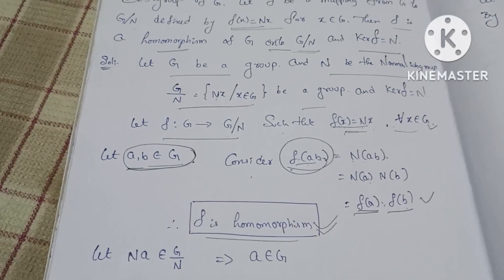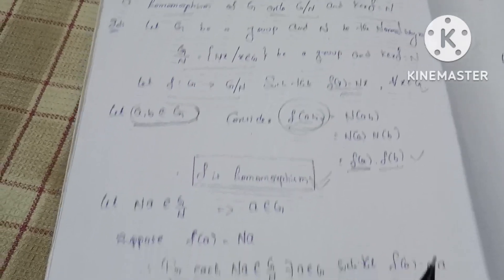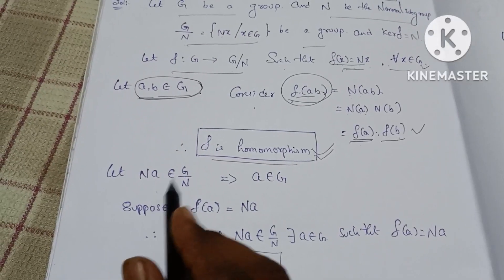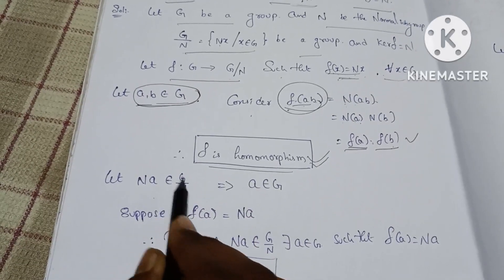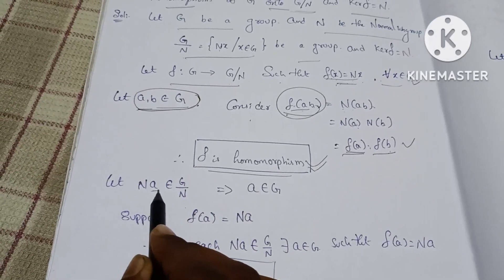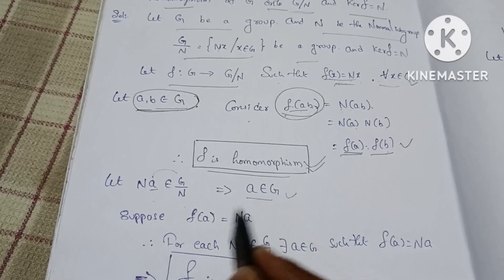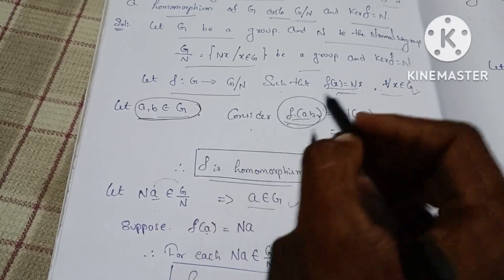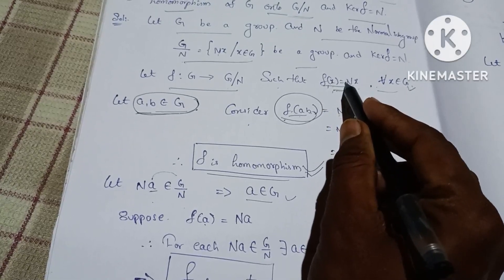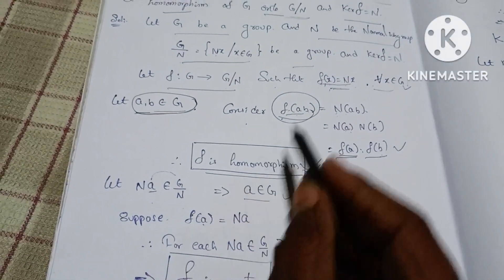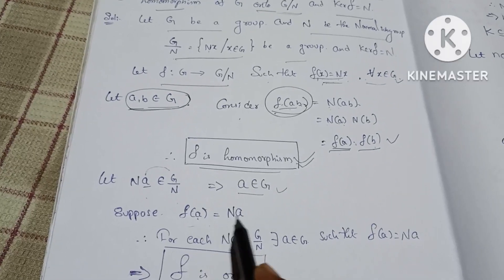Next, we prove the second condition: F is onto. Let NA belong to G/N. Then NA is an element of G/N and A belongs to G. Therefore F(A) = NA.